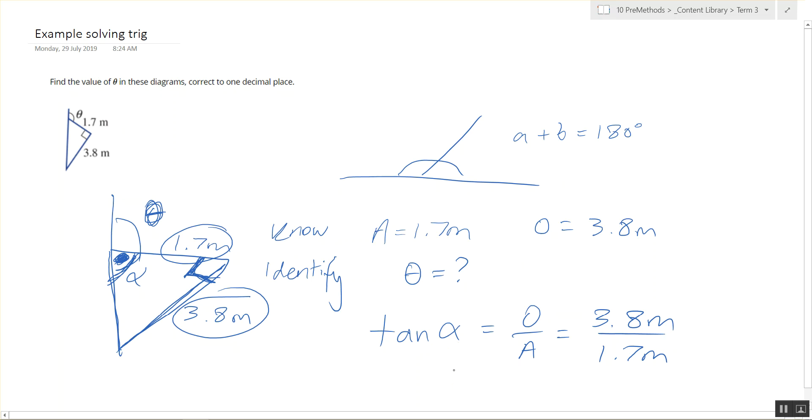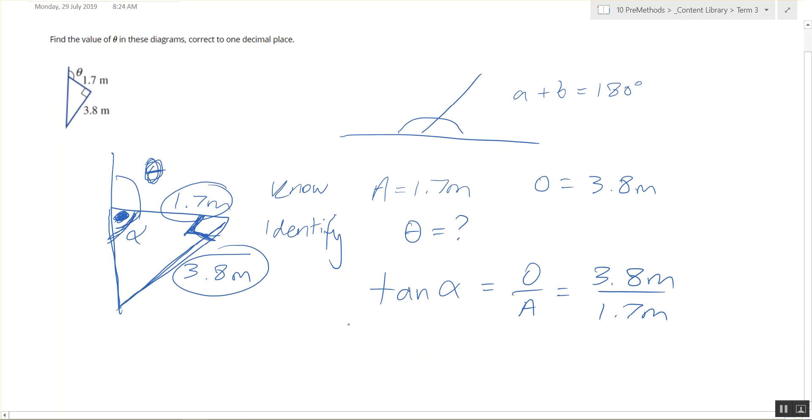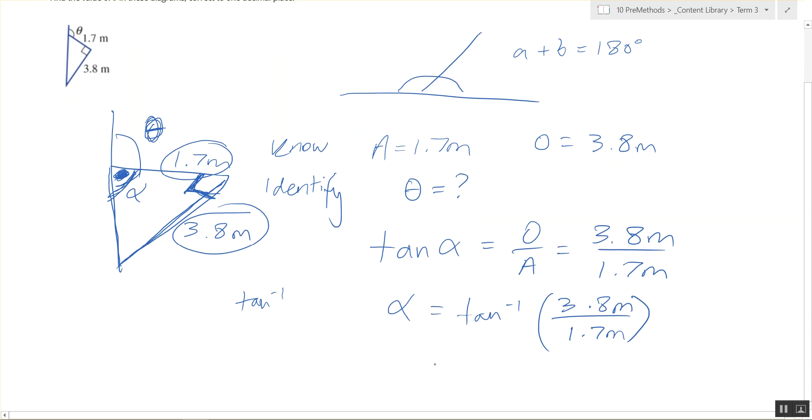Now, to get alpha by itself, we can use the tan inverse. So, we do tan negative 1 to both sides. That gets rid of tan on this side, so alpha is left by itself. And we have tan negative 1 on the other side.